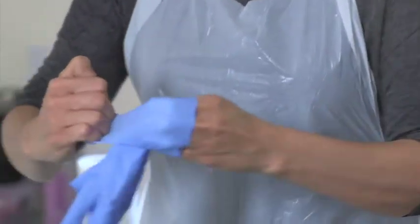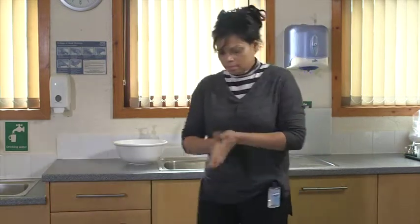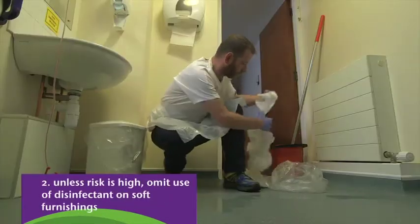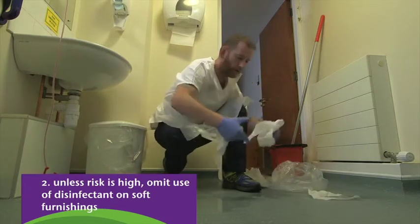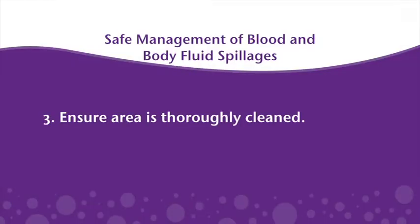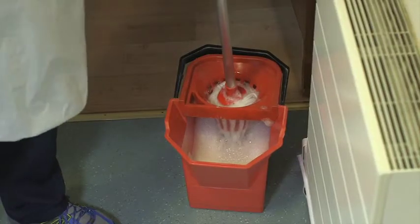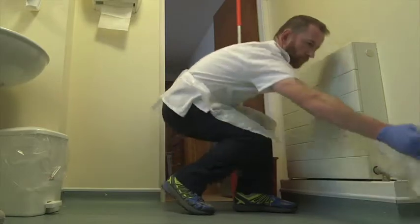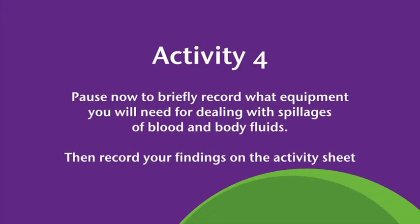Remove PPE and dispose of it in the correct bin, then carry out hand hygiene. Never use chlorine-based products directly on a urine spill. If the spillage is on a carpet or soft furnishings and is heavily contaminated, you may have to discard it. If the furnishing can withstand a chlorine-releasing solution, follow the appropriate procedure for the type of spill. If not safe to clean with detergent, the item should be discarded. All items used to clean up the spillage, including any remaining contaminated disposable cloths or kitchen roll, should be discarded in the correct waste bag. Activity 4: Pause now to briefly record what equipment you'll need for dealing with spillages of blood and/or body fluids, then record your findings on the activity sheet.